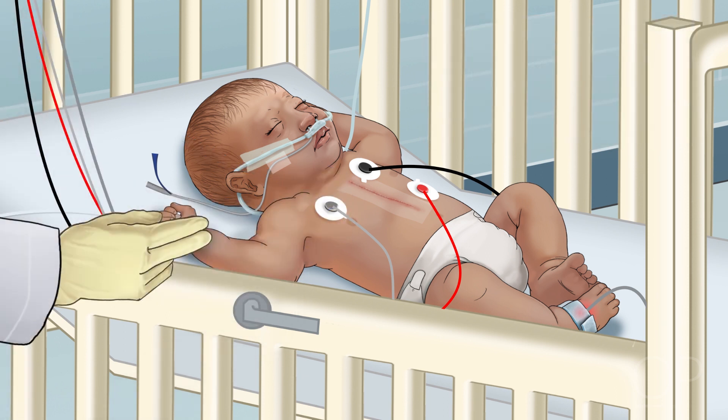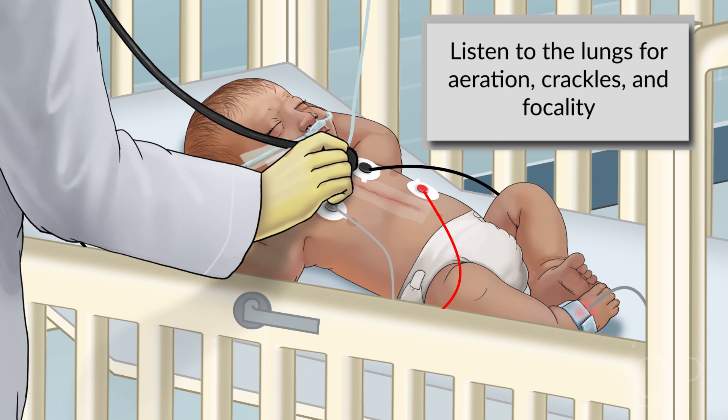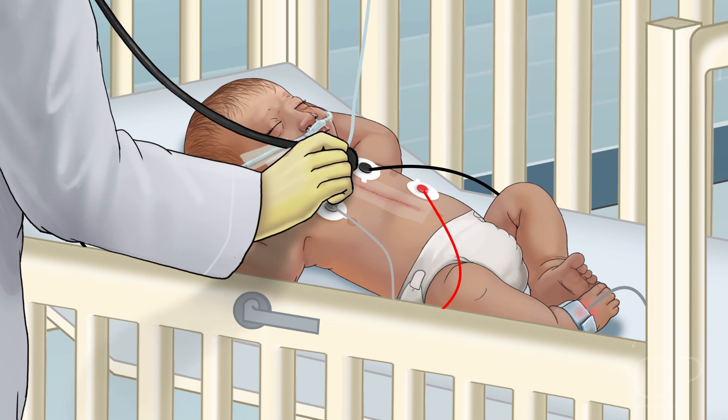Notice that in shunt thrombosis, your systemic output is initially preserved, so your pulses and capillary refill should remain normal. Finally, if you have reassured yourself about the shunt murmur, listen to the lungs for aeration, crackles, and focality. Based upon your evaluation, you may start an initial workup if the patient appears stable. Never hesitate to call for help early from your fellow or the ICU team.